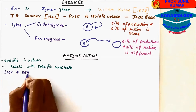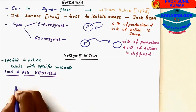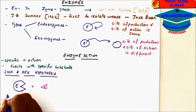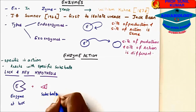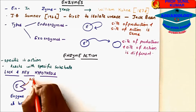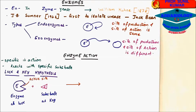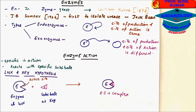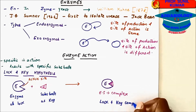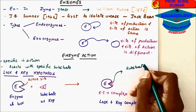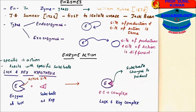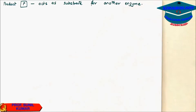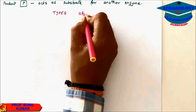We all know the lock and key hypothesis and lock and key mechanism, where the enzyme is big like a lock and the substrate is small like a key. Like every lock has a fixed key, every enzyme has a fixed substrate. They bind at the active site to form an enzyme-substrate complex. The enzyme alters the substrate and converts it into a product, which then acts as a substrate for a new enzyme.